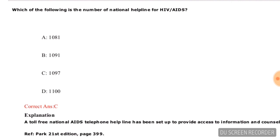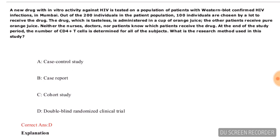A new drug with in-vitro activity against HIV is tested on a population of patients with Western blot-confirmed HIV infections in Mumbai. Out of 200 individuals, 100 are chosen by lot to receive the drug, which is tasteless and administered in orange juice. The other patients receive pure orange juice. Neither nurses, doctors, nor patients know who received the drug. At the end of the study, CD4+ T cell counts are determined for all subjects. What research method is used? The correct answer is option D — double-blind randomized clinical trial.